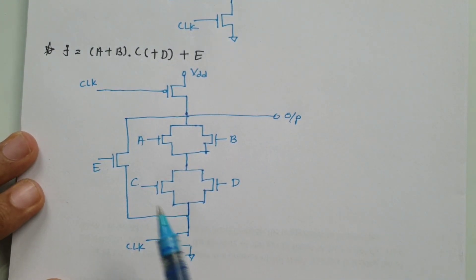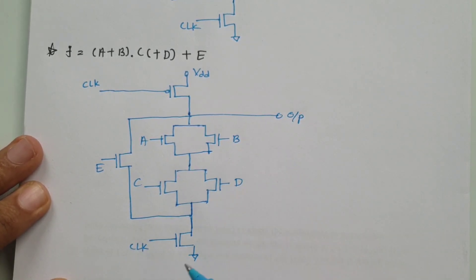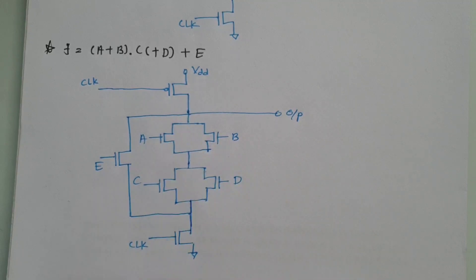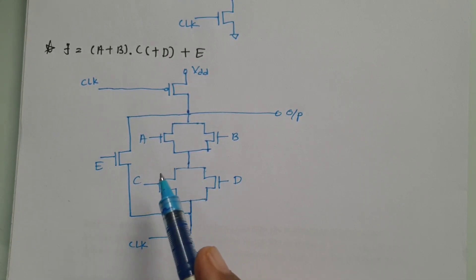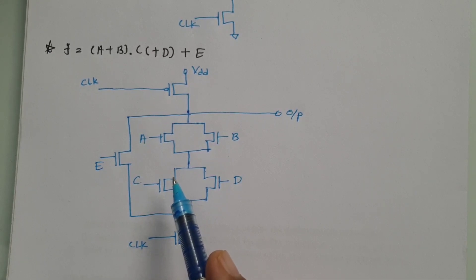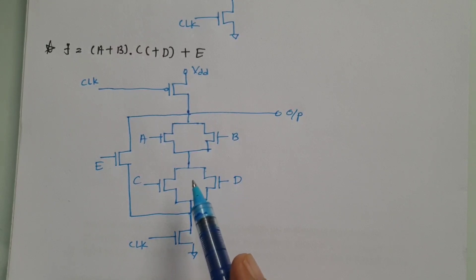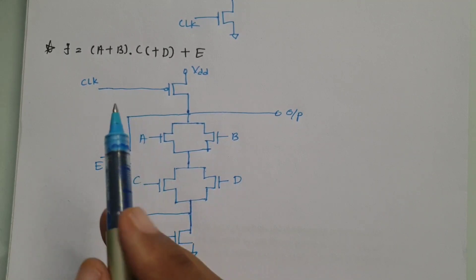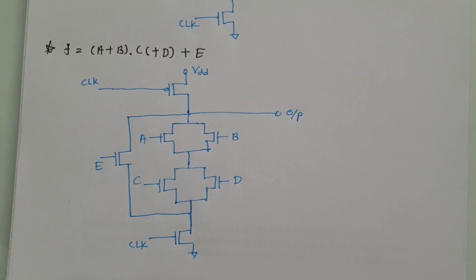This is our Boolean function implementation using dynamic CMOS. There are a few key points: VDD supply is connected with the gated clock PMOS, ground is connected with the gated clock NMOS, and in between there is the pull-down network made of NMOS. For dot operation NMOS should be in series, and for plus operation NMOS should be in parallel. The output is taken above the pull-down network. I hope you have understood this video — thank you for watching, and please give your valuable suggestions so I can make future videos that solve your queries.